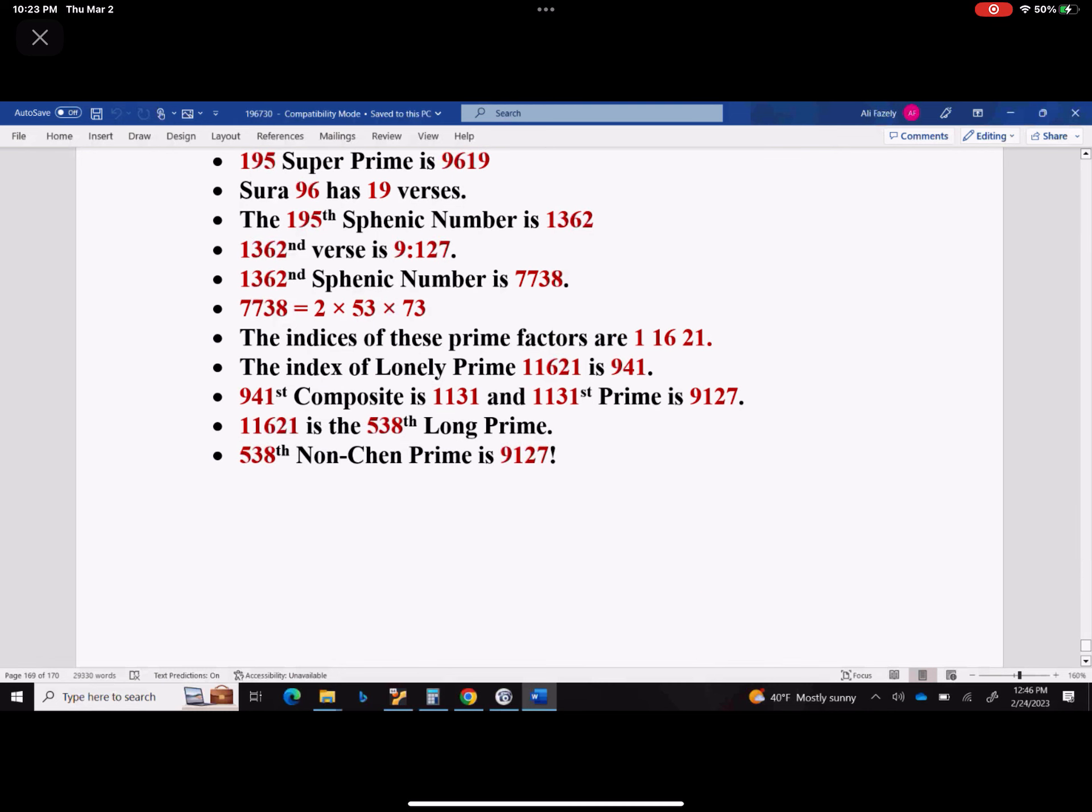The indices of these prime factors are 1, 16, and 21. The indices of lonely prime 11621 is 941, but 941st composite is 1131, and 1131st prime is 9127. 11621 happens to be a long prime. It happens to be 538th long prime. But 538th non-Chen prime is, again, 9127.